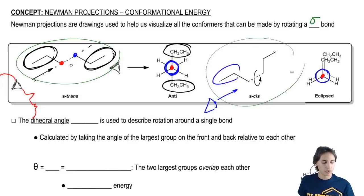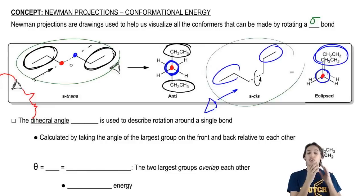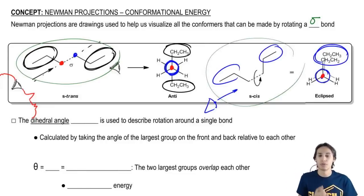But what I would also see is that now the big groups are overlapping each other. Instead of being on opposite sides, they're overlapping. And that has a huge difference in how stable these molecules are, how stable these conformations are.